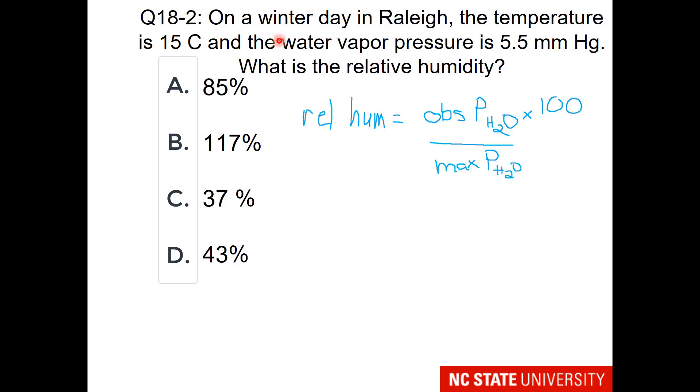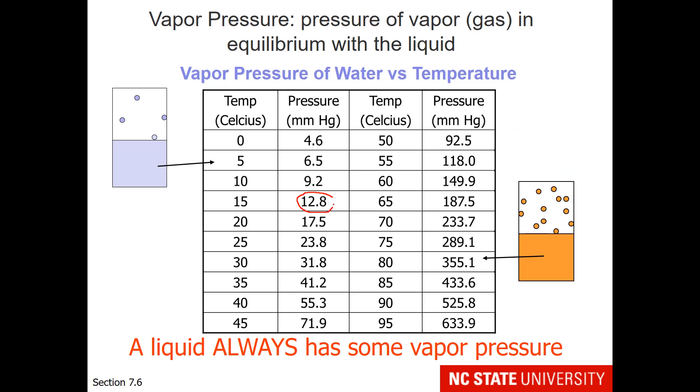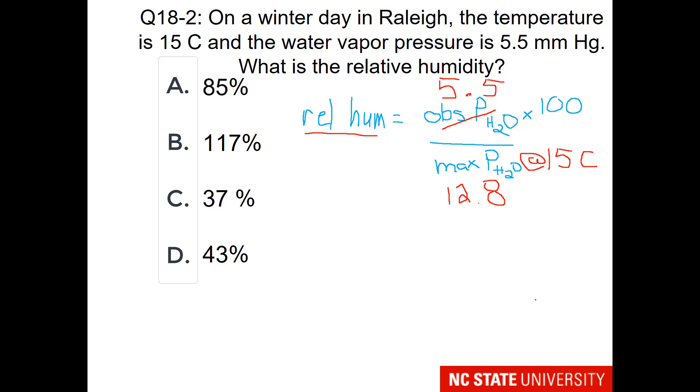In this question, we'd like to know, on a winter day in Raleigh, the temperature is 15 degrees Celsius and the water vapor pressure is 5.5 millimeters of mercury. What is the relative humidity? Here is our formula. Our observed vapor pressure is 5.5. We're going to have to look up the maximum pressure of water at 15 degrees Celsius, so let's go back to the chart. This value appears to be 12.8. So please solve for the relative humidity.